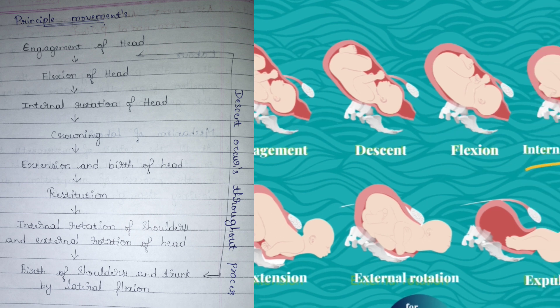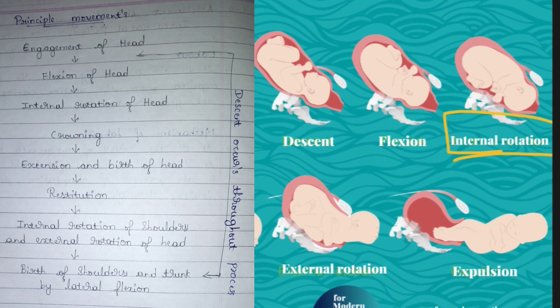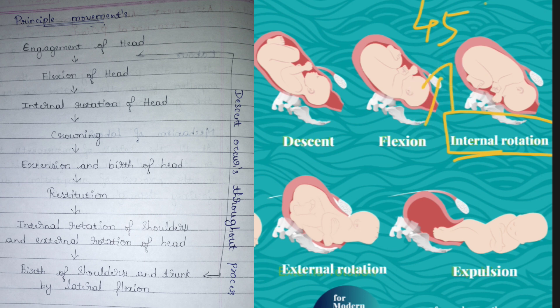Next is internal rotation. Internal rotation is when the baby rotates inside the womb before coming out — rotating for safe delivery by 45 degrees. As you can see here, the baby is in one position, and now the baby rotates to another position, rotating 45 degrees. That is internal rotation.